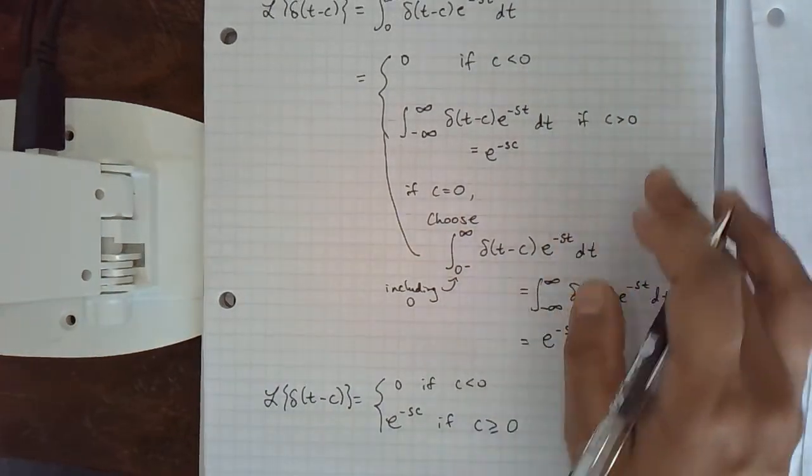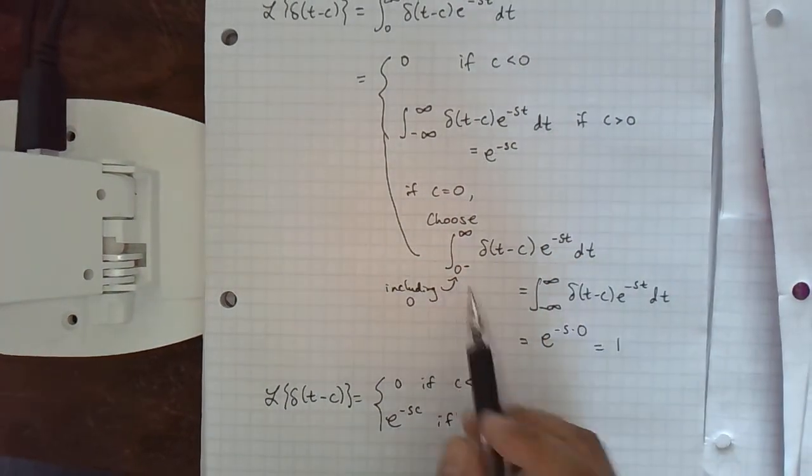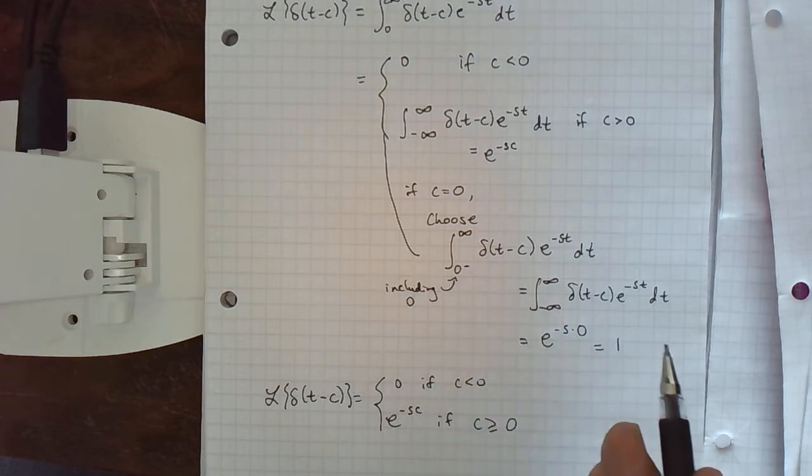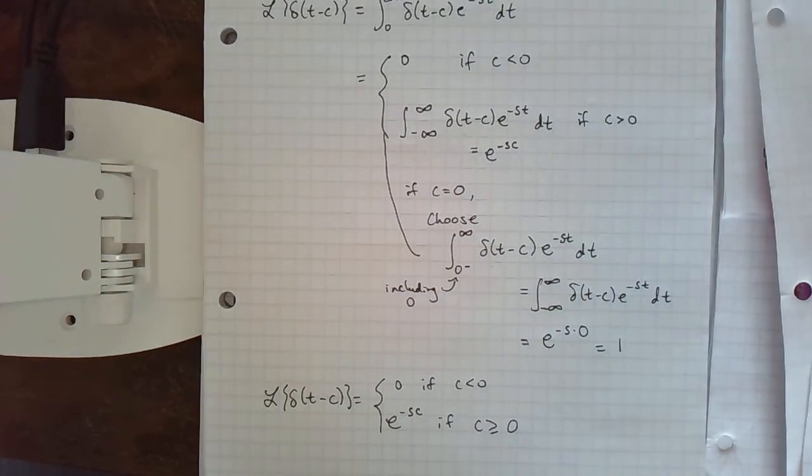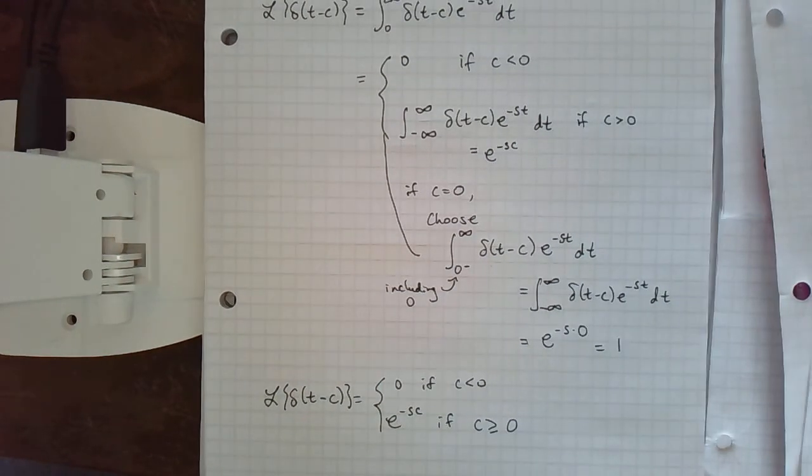The case c equal to zero turned out to be the same as c greater than zero, as long as we went very slightly left of zero - an unnoticeable amount. And that's what calculus is good for.